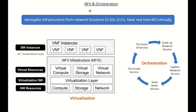Let's understand the important topics of virtualization and orchestration. Network function virtualization helps to decouple the underlying infrastructure from the different network functions. In the case of Open RAN, these are the ODU, OCU, or near real-time RIC, and all of this is done virtually.